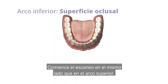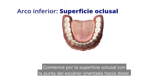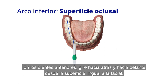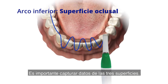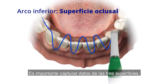Start scanning the lower arch on the same side as with the upper arch. Start from the occlusal surface with the tip of the scanner pointing towards the distal. On the interiors, rotate back and forth from the lingual to the facial. It is important to capture data on all three surfaces.